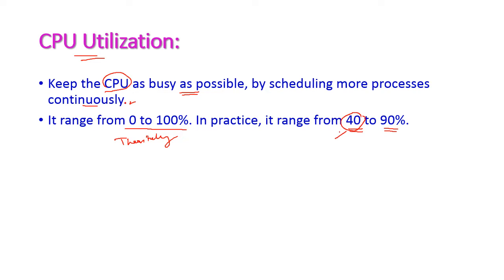Hence, the minimum 40 percent utilization will always be there. But maximum we cannot utilize 100 percent; however, 90 percent utilization is possible. So we have to increase the CPU utilization by assigning more processes continuously.